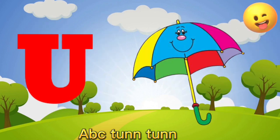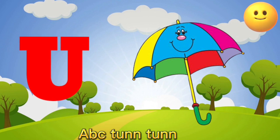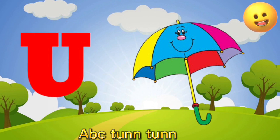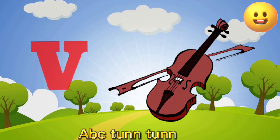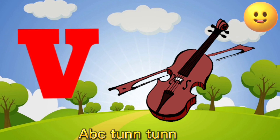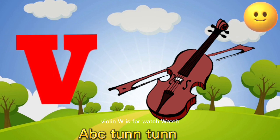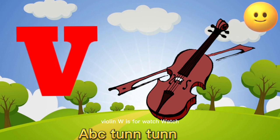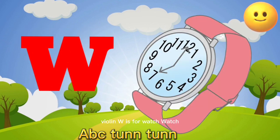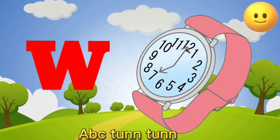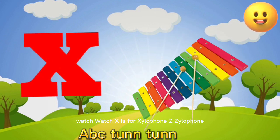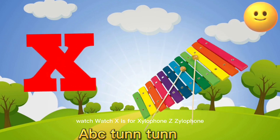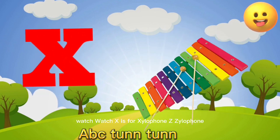U is for umbrella, u-u-umbrella. V is for violin, v-v-violin. W is for watch, w-w-watch. X is for xylophone, x-x-xylophone.